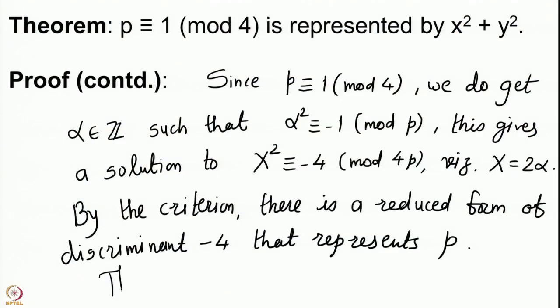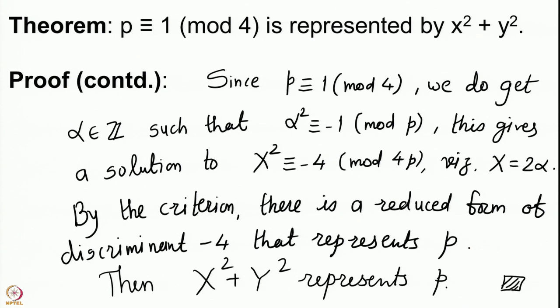We proved that h(−4) = 1, so there is only one form which is reduced and of discriminant −4, and that form is nothing else but x² + y². Since we have proved that there is a reduced form of discriminant −4 which represents p, it follows that x² + y² represents our prime p.